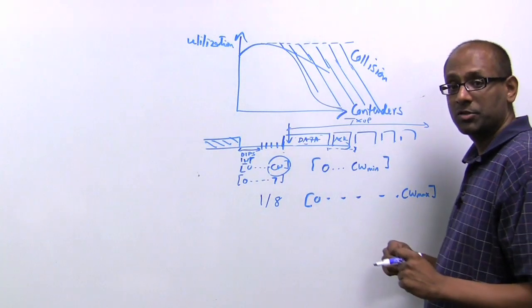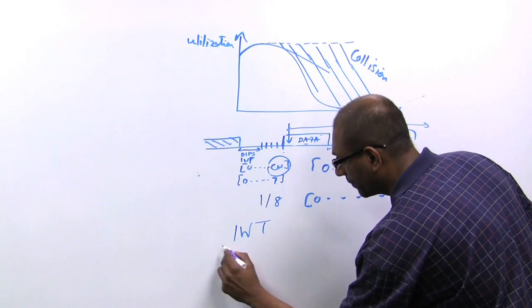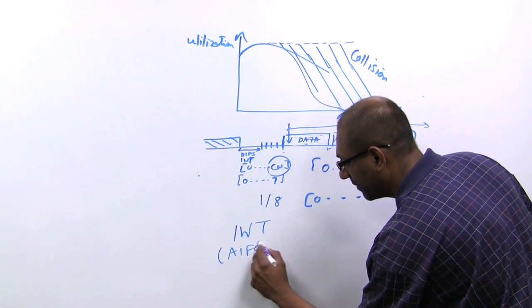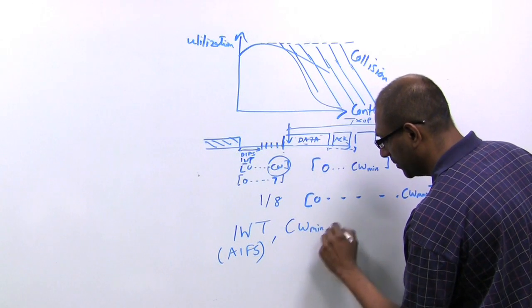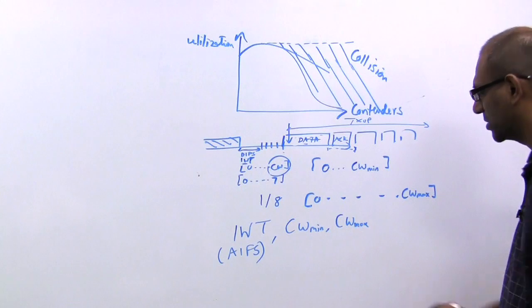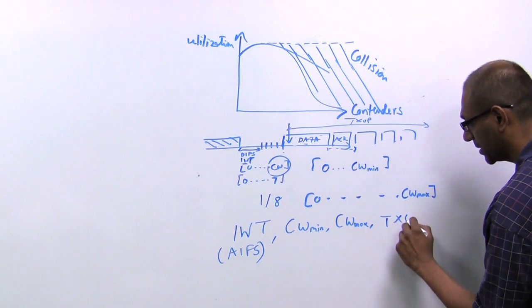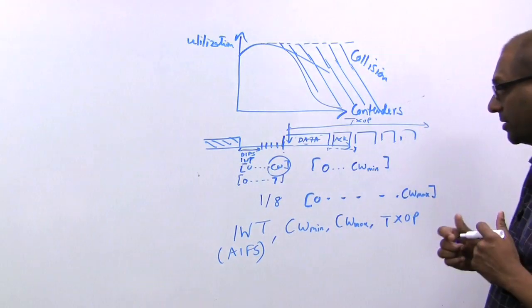To summarize then, WMM allows you to customize four parameters. This initial wait time, governed by AIFS, CW min and CW max, which for the purposes of this discussion, let's just think of it as contention window, and TXOP, which is the transmit opportunity, which is the length of time that you transmit once you get to win a contention run.